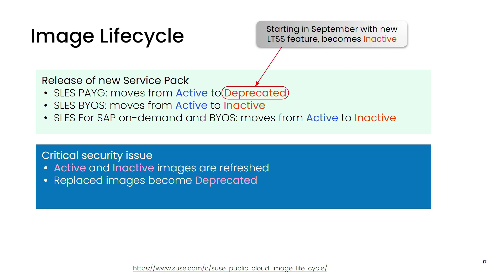This is automated — there's no human interference, it just happens. For BYOS images, when there's a new distribution, it goes from active to inactive. And for SAP, similarly, when there's a new distribution it goes from active to inactive. Critical security issues — CVSS nine and higher — trigger automatic refresh for active and inactive images, and the replaced images become deprecated.